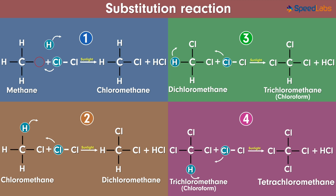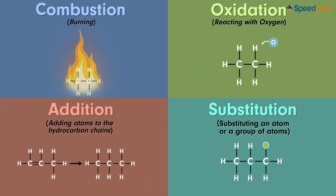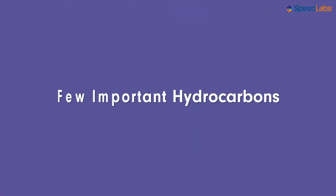And again, a molecule of hydrogen chloride is formed as a by-product. This is how many important commercial products can be obtained using substitution reactions of various hydrocarbons. Now that we are done with the four major properties of hydrocarbons, let's have a look at a few hydrocarbons that form an integral part of our everyday life. Meet you in the next video!